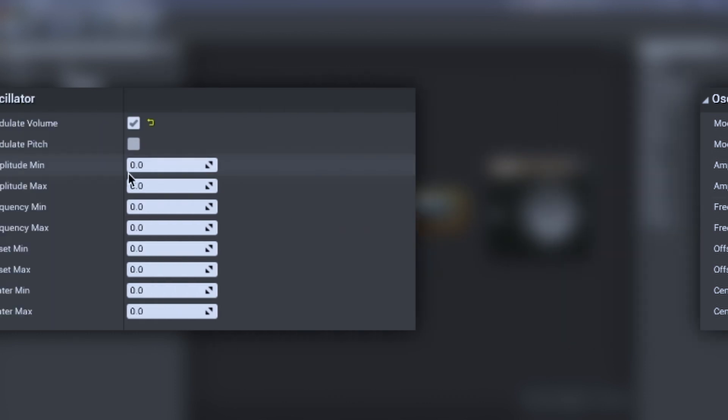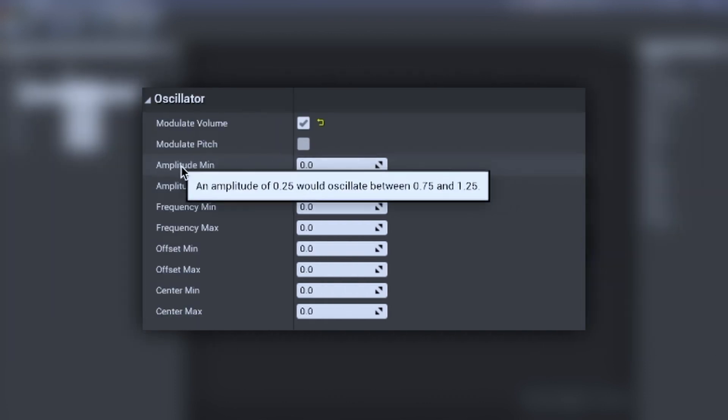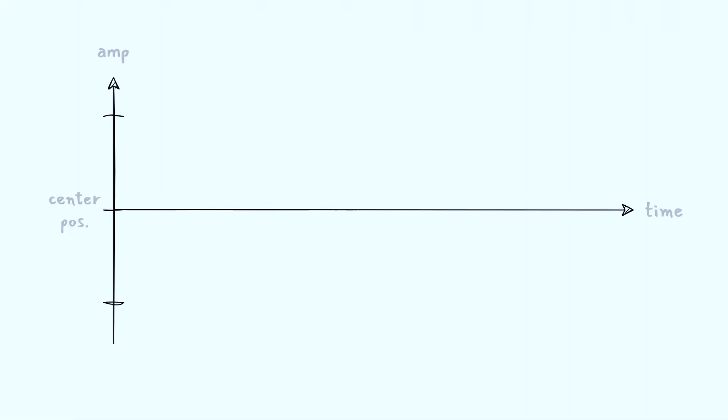If we move the cursor over amplitude, we can read that an amplitude of 0.25 would oscillate between 0.75 and 1.25. What we understand is that the oscillator is producing a bipolar signal, which means that it produces a curve which has half of it above its center position and the other half below it. So the full range of the oscillation is twice the value we write in the number box.